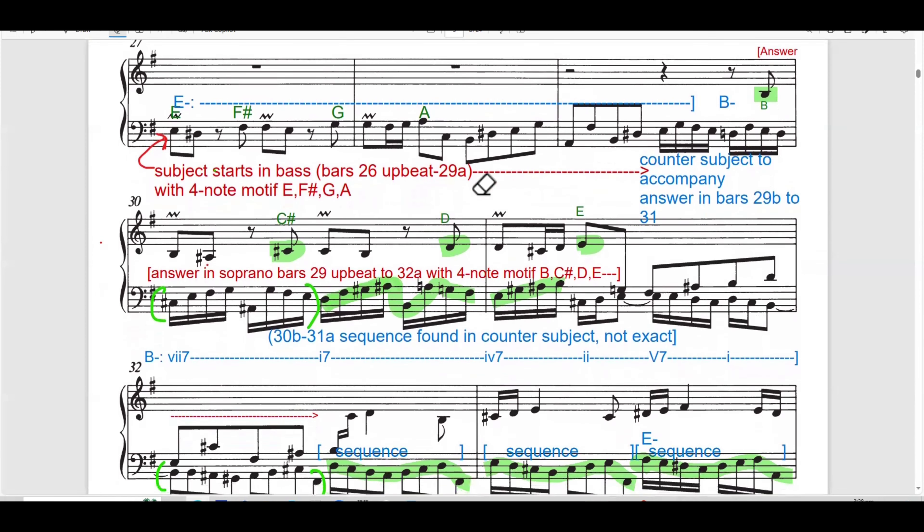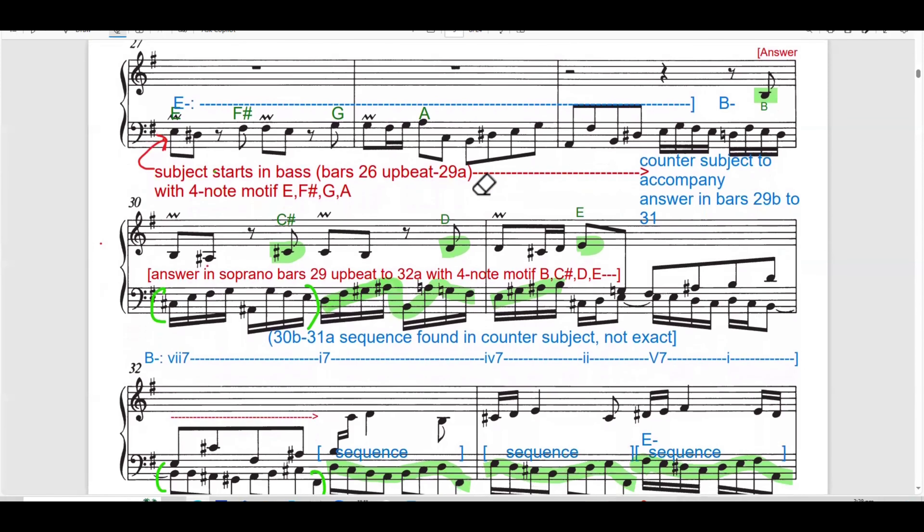And it consists of exposition, episodes, stretto, and pedal point, and coda. So, you can take a screenshot of this to find out, to understand further more on what does the fugue mean. So, these are the elements that you'll find in the fugue. So, I hope this information are helpful for you. Let's continue.